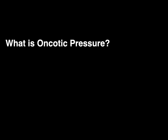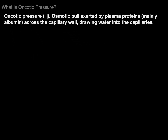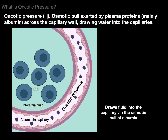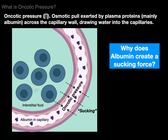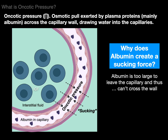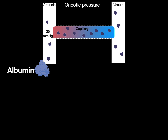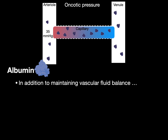What is oncotic pressure, or colloid osmotic pressure? It's the osmotic pull exerted by plasma proteins — mainly albumin — across the capillary wall, drawing water into the capillaries. Albumin, shown as little purple structures in the plasma, creates an oncotic pressure that draws fluid into the capillary via osmotic pull — a sucking force. Albumin creates this sucking force because it is too large to leave the capillary and cannot cross the capillary wall. In addition to maintaining vascular fluid balance, albumin also carries hormones, fatty acids, bilirubin, and drugs.